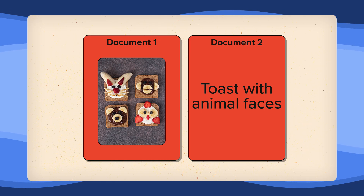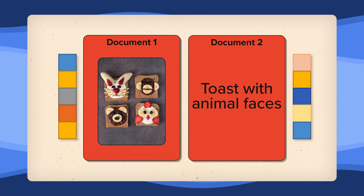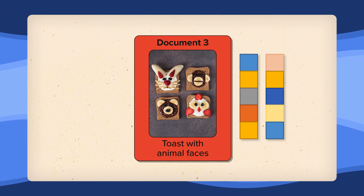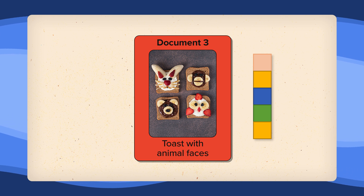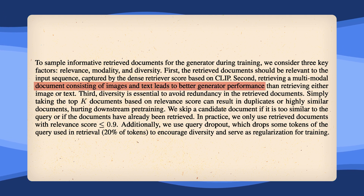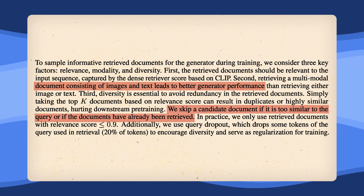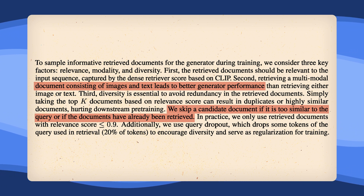So how does this retrieval work? The idea is actually really simple. The authors use an off-the-shelf frozen CLIP model to encode the input query — for example, a simple text prompt — and sort similar candidates from a memory bank by a relevance score. The individual text and image examples in the memory bank simply pass through the CLIP model once, but for the image-and-caption documents, the authors split the text and image, encode them separately, and then average the two as a vector representation of the whole document. The authors don't simply select the most similar document, but use different heuristics to make the retrieval more informative — for example, a document consisting of image and text is more informative than only text or only image. Or they skip a candidate document if it is too similar to the query or if the same document has already been retrieved.